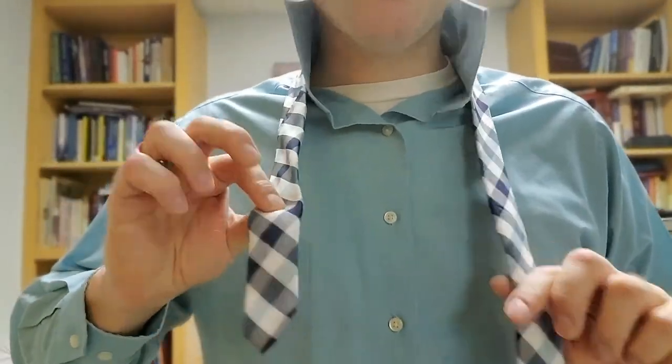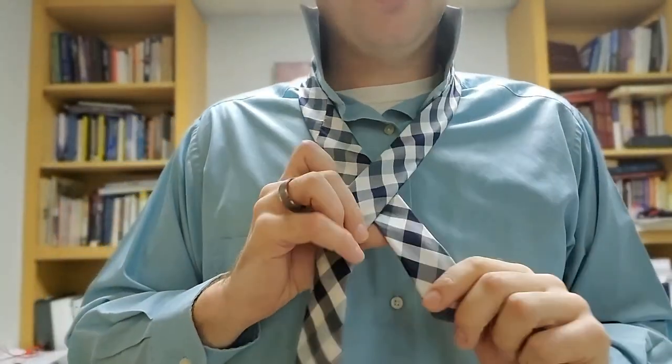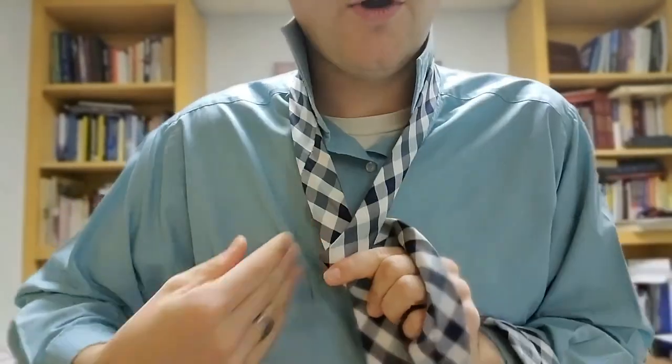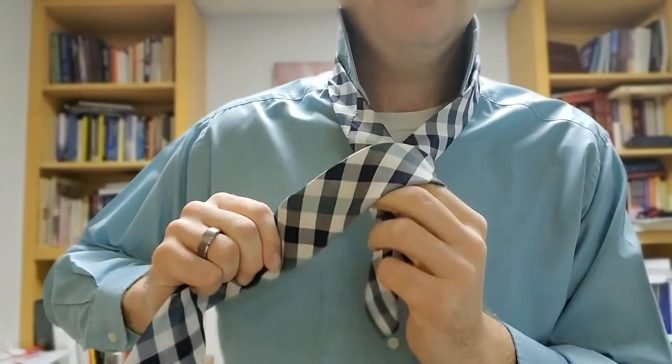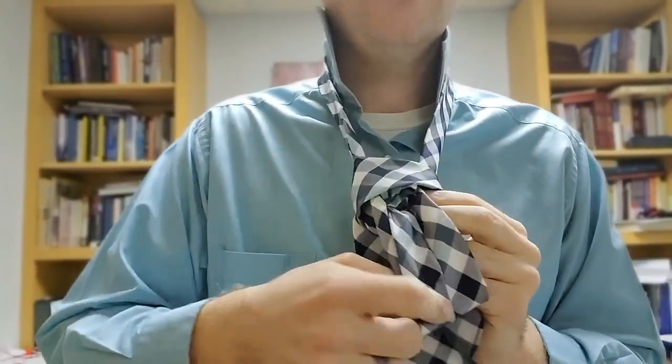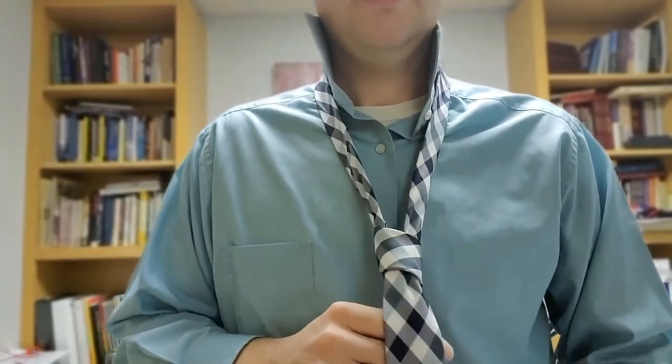So what you're going to start, start with your short side and then the long side with the fat end. You're just going to go over. Standard way to start a tie. Go all the way around. Come up through the top. And pull it down through. Tighten it up.